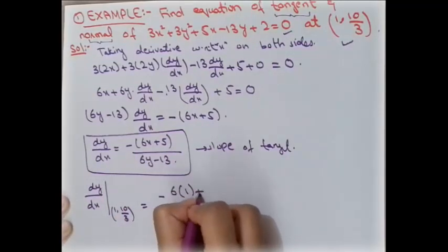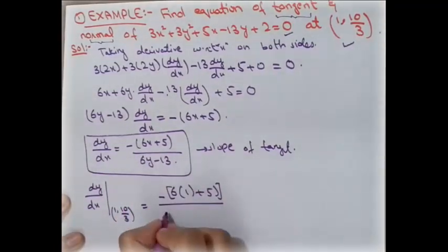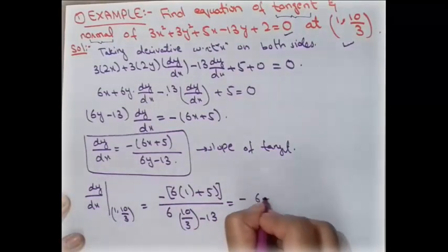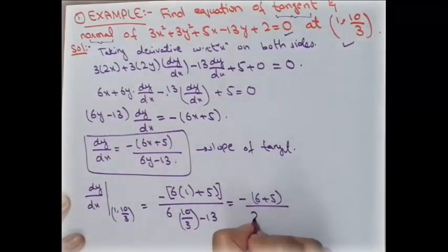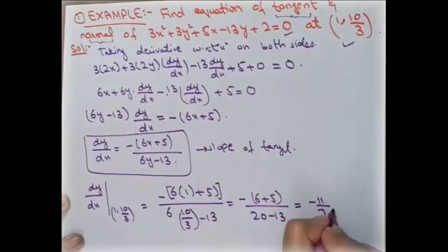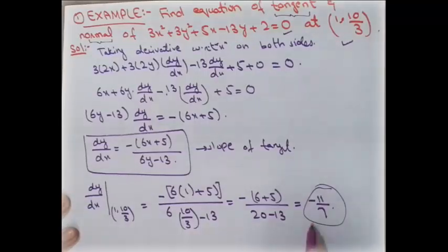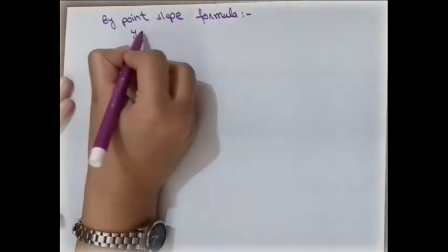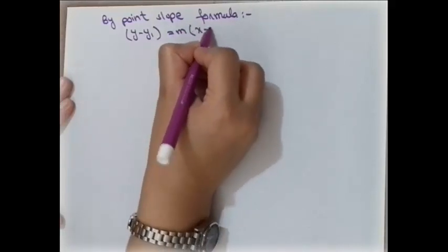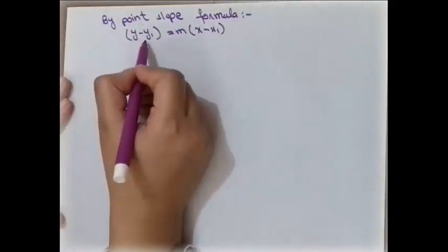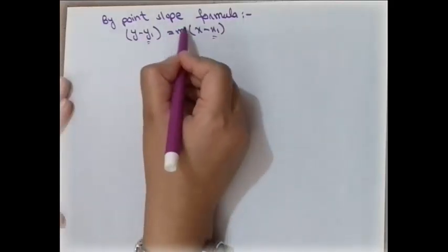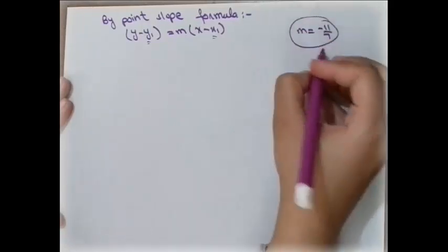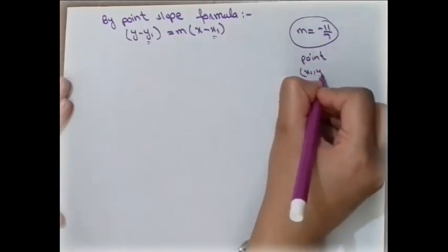Substituting x = 1 and y = 10/3: dy/dx = −(6·1 + 5) / (6·(10/3) − 13) = −(6 + 5) / (20 − 13) = −11/7. So the slope of the tangent at the point (1, 10/3) is −11/7.